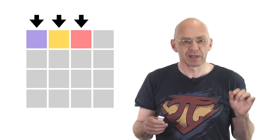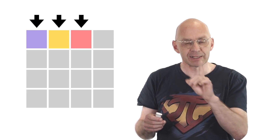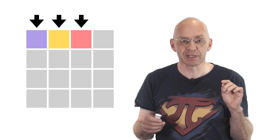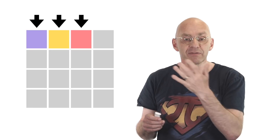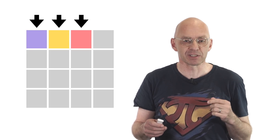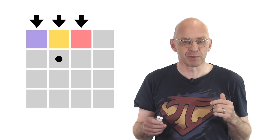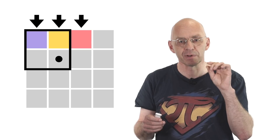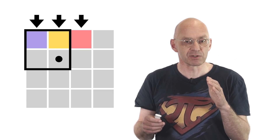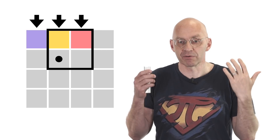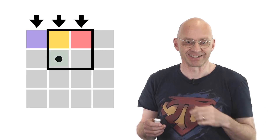Next, let's have a look at these three squares at the top — they happen to be of different colors. Let's say the only thing we know about one of these special colorings of the grid is the colors of these three squares. What can we deduce about the rest of the coloring? Well, this square is part of this 2 by 2, so it cannot be purple or yellow. Since it's also part of this 2 by 2, it can also not be red. So since it's not purple, yellow, or red, it's got to be green. No other choice.